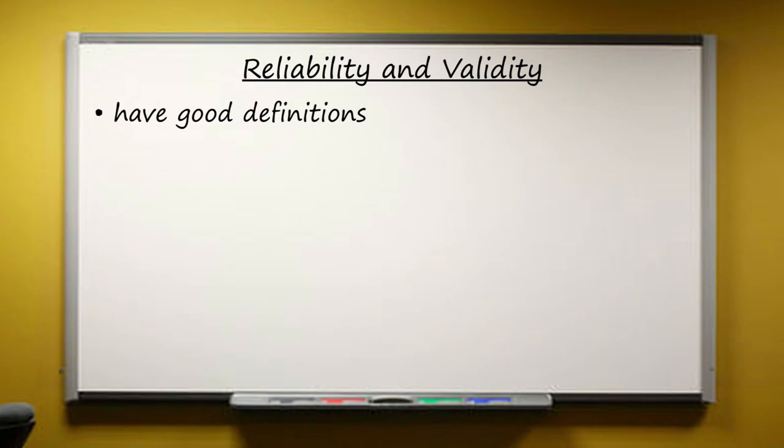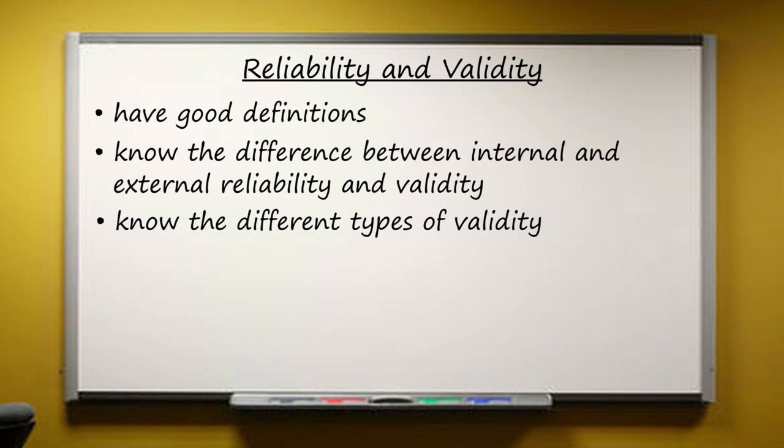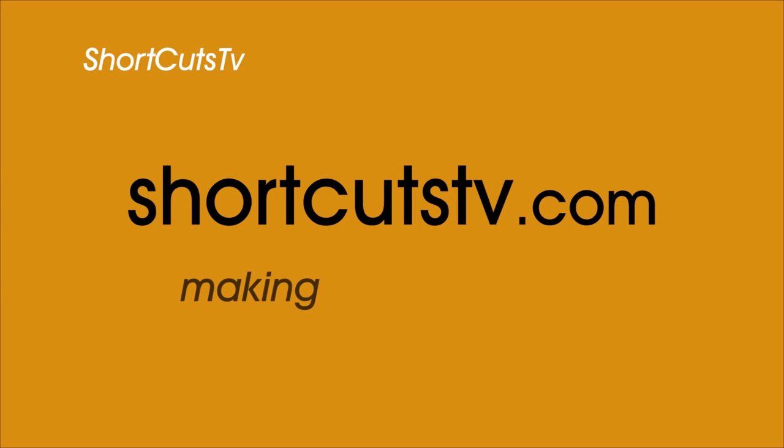So in summary, what do you need to know about reliability and validity? First, make absolutely sure you've got good definitions of each concept — and don't make the mistake of saying validity means something is true, because what's true today might be false tomorrow. Make sure you can explain the difference between internal and external reliability and validity, and know the different types of validity with relevant examples. A good definition is essential, but go further by demonstrating that you understand questions of reliability and validity are about questioning the data, testing it, and seeing how much confidence we should have in it. Remember: as in life, you can't always have it all, and sometimes researchers have to give precedence to reliability over validity, and vice versa. Good luck with your revision, and don't forget to check out other Shortcuts to Psychology revision at ShortcutsTV.com.